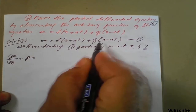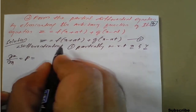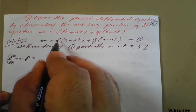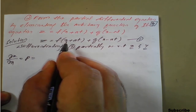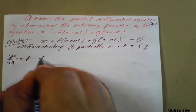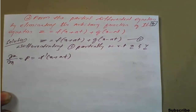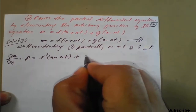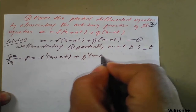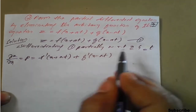Since there is a plus sign, we differentiate each term separately — no product rule needed. The derivative of f(x + at) with respect to x is f'(x + at) · 1, and the derivative of g(x - at) with respect to x is g'(x - at) · 1. This is Equation 2.